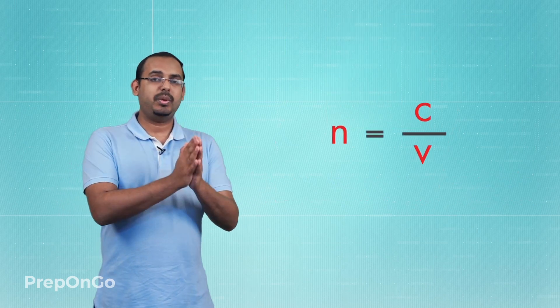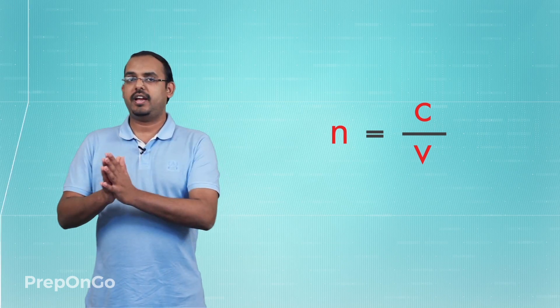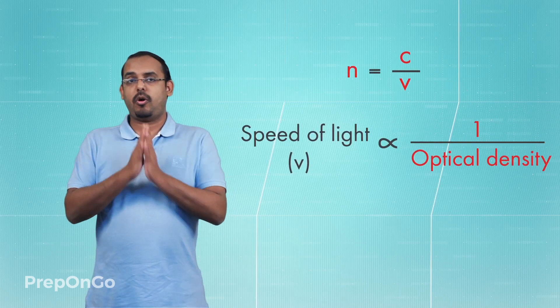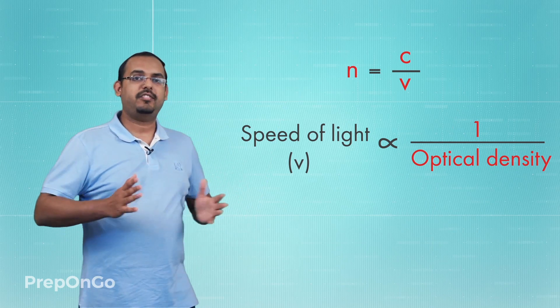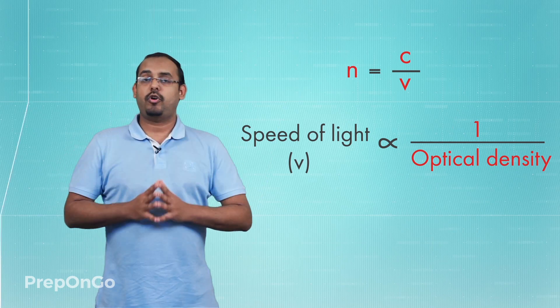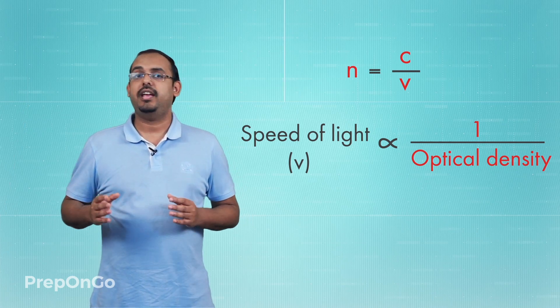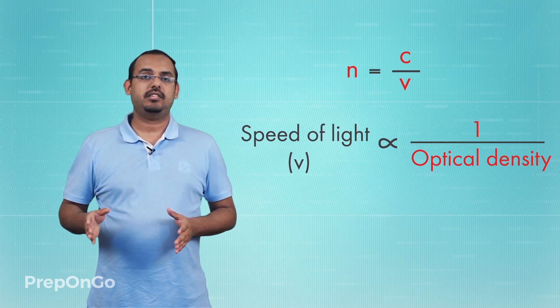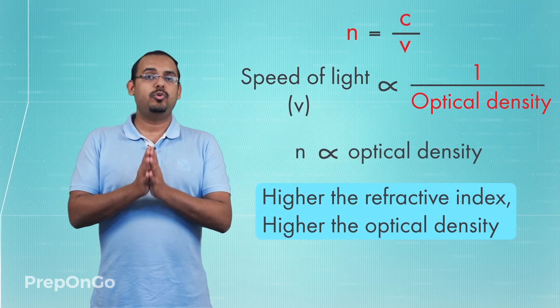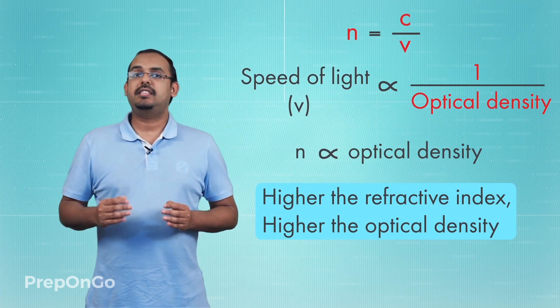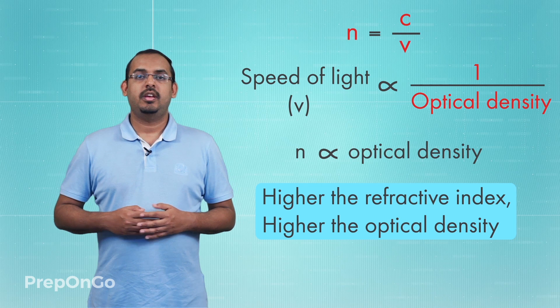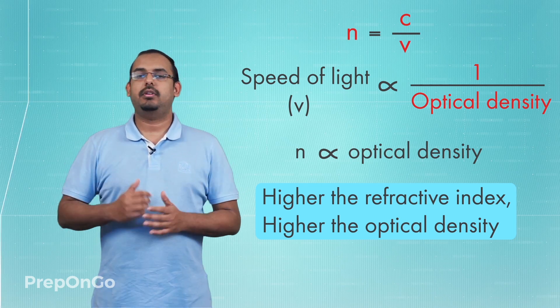We have two relationships: the relationship between refractive index and the speed of light, and the relationship between speed of light and optical density. Combining these, for a medium with a high refractive index, the speed of light is low, which means that medium is optically denser. So a higher absolute refractive index means the material is an optically denser medium. Higher the refractive index, higher is the optical density of the medium.